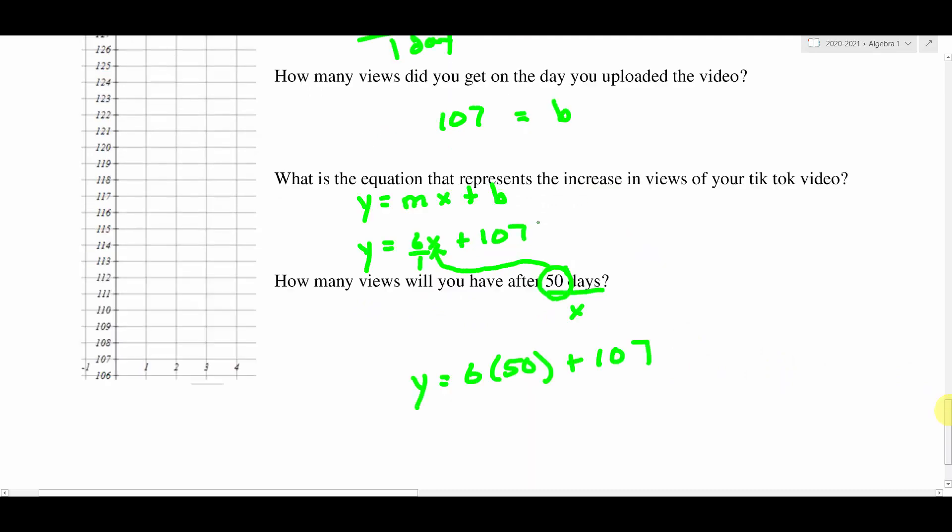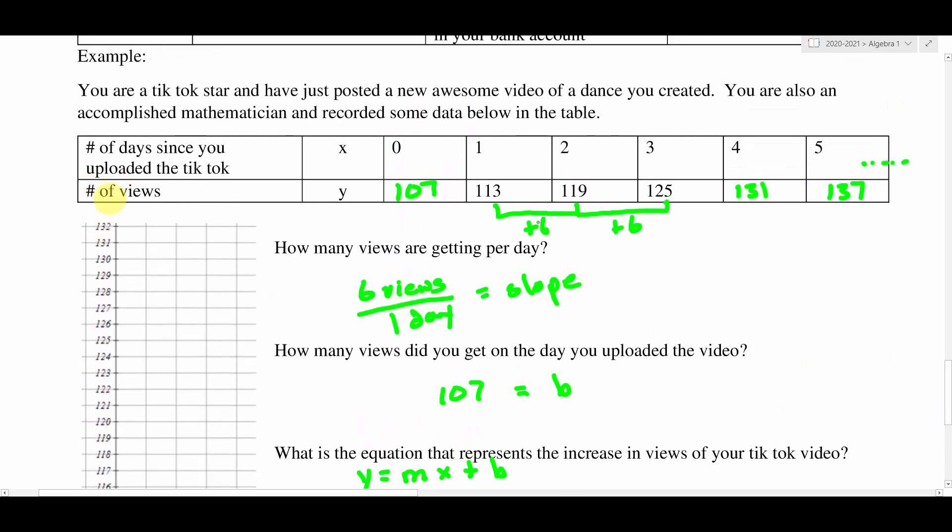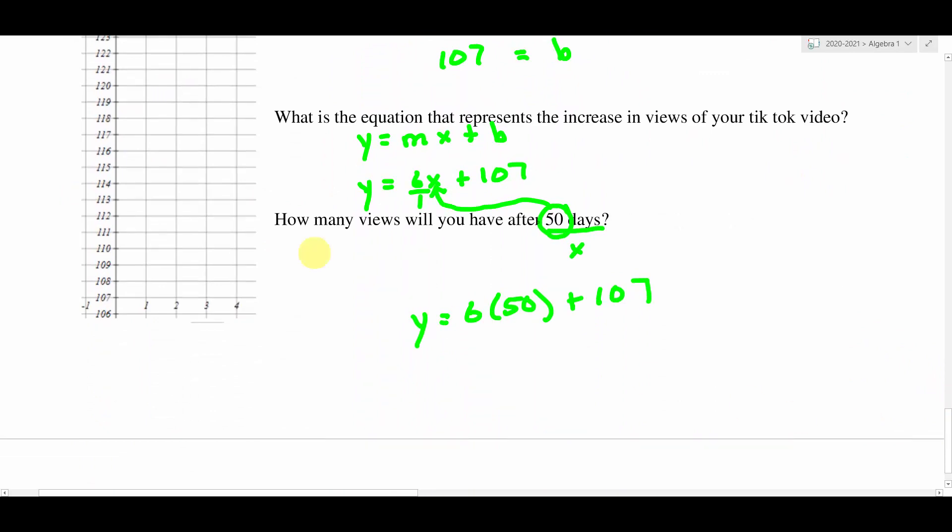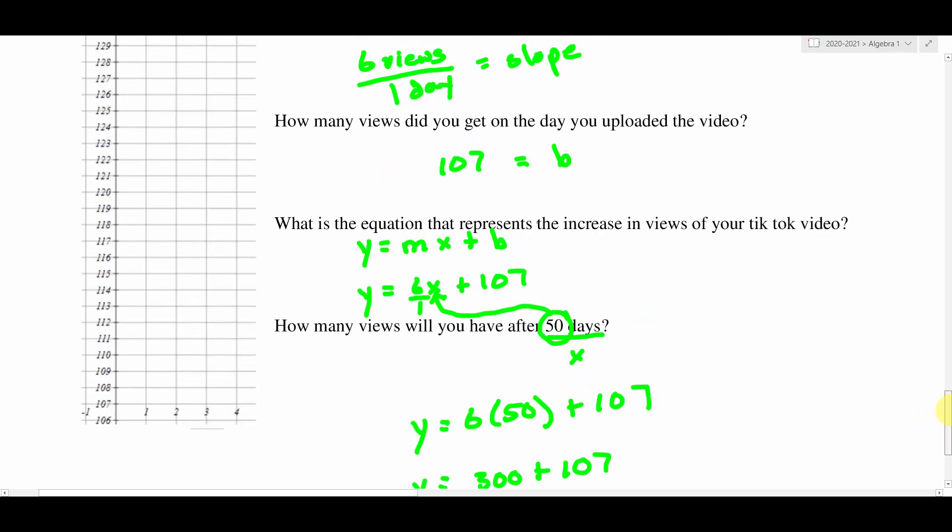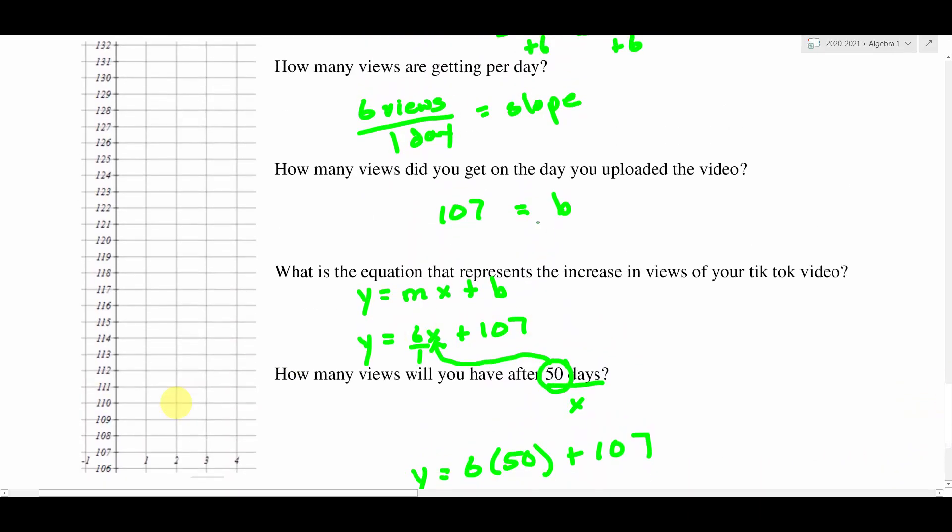Now remember what y represents. Go back up to your table and look at what y represents. Y represents the number of views, and that's exactly what they want to know is how many views. So once I do this calculation right here, I'm going to know what y is. That's what I'm trying to figure out. So 6 times 50 is 300 plus 107. So I can say y equals, and then 300 plus 107 is 407 views. So after 50 days, I would get 407 views. That's a lot of views, I think. I don't know. I have never posted on TikTok, so that would be a lot of views for me for sure.